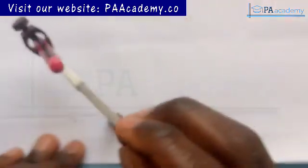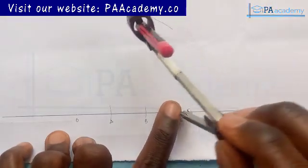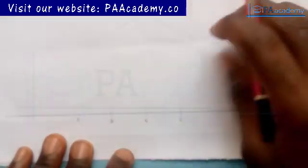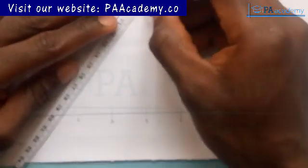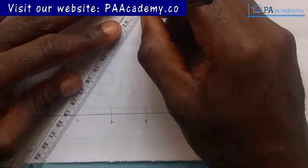With the same length, you come to point C and draw an arc. From the point of intersection, you draw a line to point O.